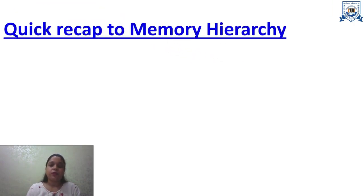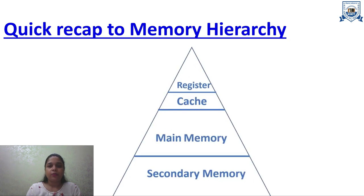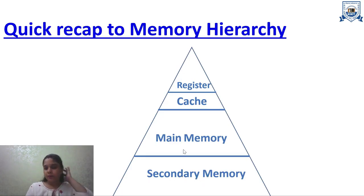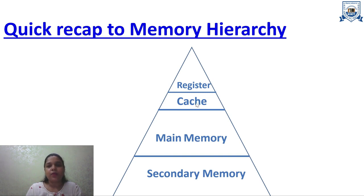Let's recall the memory hierarchy that we studied in the last semester. At the bottom you will find secondary memory — for example, magnetic tape. Then above that you have main memory, for example RAM. Above that you will see cache, which is the fastest memory. And then we have registers.